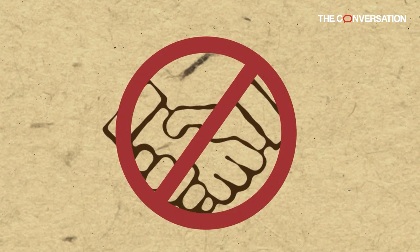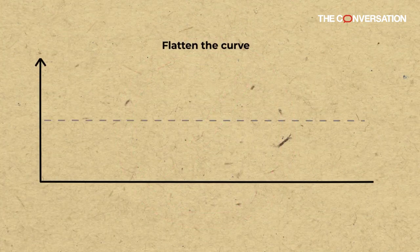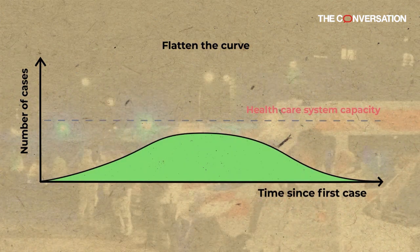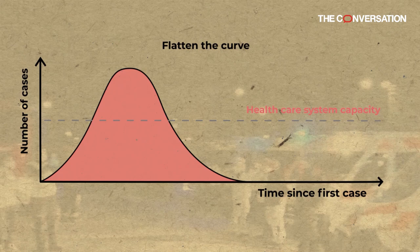The goal is to keep the number of cases at any one time below the capacity of the healthcare system. This is what people mean when they say social distancing can flatten the curve.